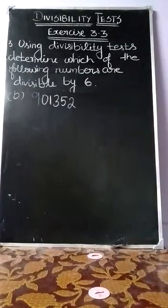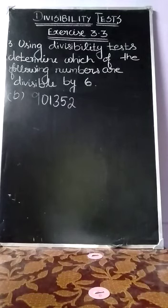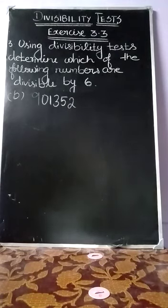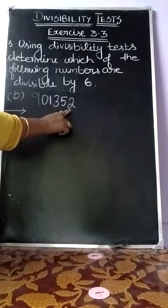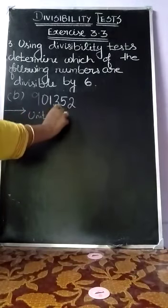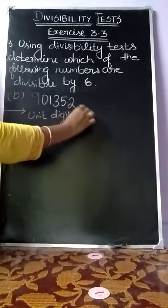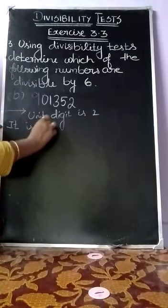Next is subdivision B: 901352. That is our given number. First, we check if the given value is divisible by 2 or not, then whether it is divisible by 3 or not — only then can we say the whole value is divisible by 6. Checking: the unit digit value is 2, so it is divisible by 2.